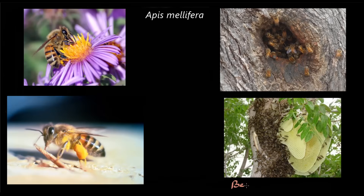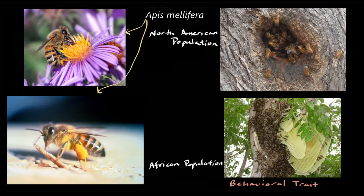We see this with honeybees adapted to life in Africa, sometimes called by the suboptimal names Africanized honeybees or killer bees. They're the same species as, and look identical to, populations of honeybees adapted to North America. But their behaviors diverge dramatically. Because the African populations are adapted to life in a hot tropical environment, sometimes they construct nests right out in the open air — this is extremely rare for populations adapted to the temperate climate of North America, where the temperature range is far too broad between winter and summer for open air nests to be successful.